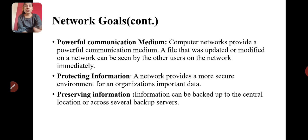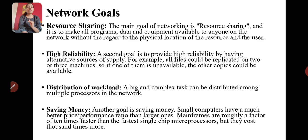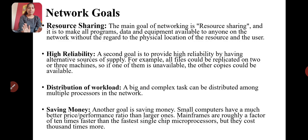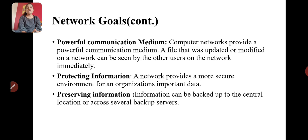Quick revision of network goals: resource sharing — share programs, data, and equipment. High reliability — replications of data provide an alternative source; if one data fails, access from another machine. Distribution of workload — big and complex tasks distributed among multiple processors. Saving money — using single chip microprocessors. Powerful communication medium — modifications reflect immediately. Protecting information — secure environment. Preserving information — data backed up to central location.